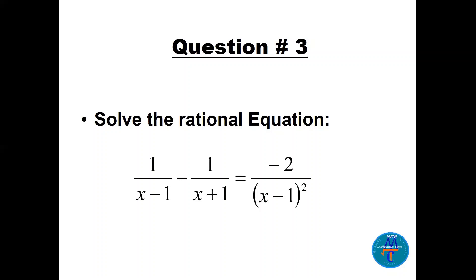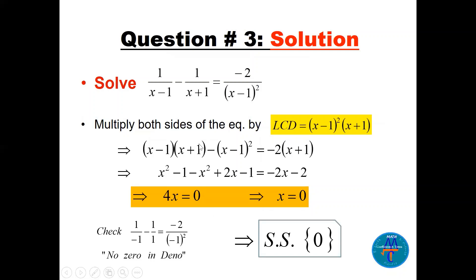Question 3: Solve the rational equation. Anytime you have fractions, find the LCD, multiply both sides by the LCD to remove all fractions, then check your solution because we have a variable in the denominator. This denominator is already factored as (x − 1)², so the LCD will be (x − 1)² times (x + 1), taking the highest power. Multiply each term by the LCD.